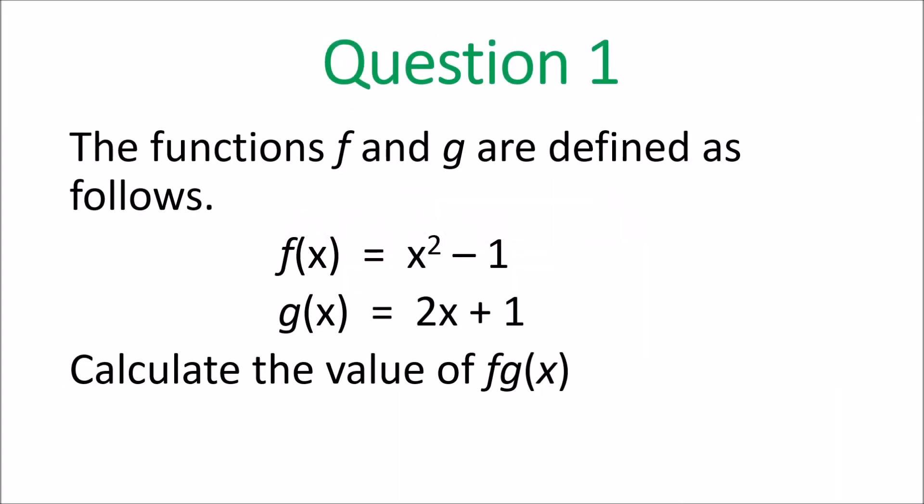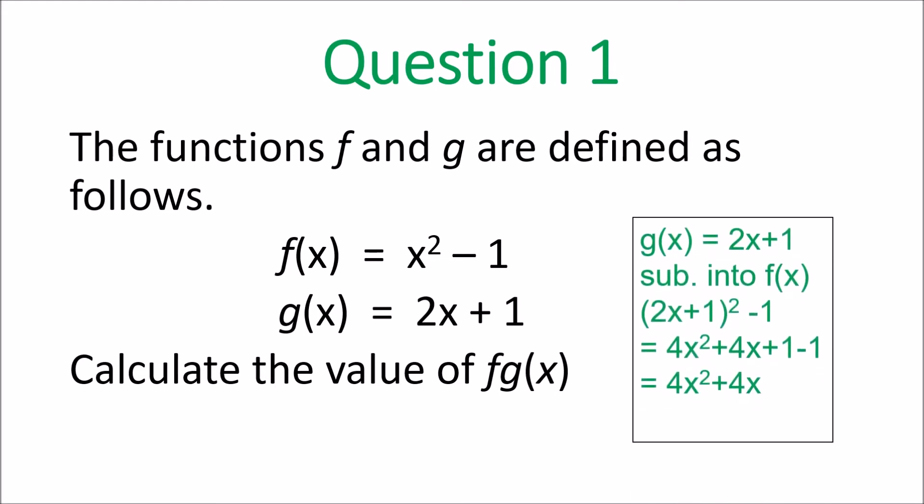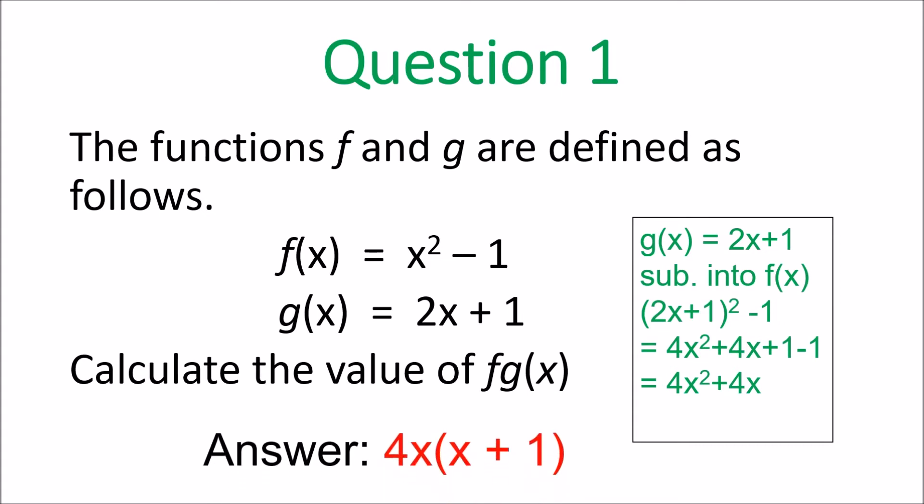Answers. Question 1 — we have a composite function. g of x is 2x plus 1, so substitute that into f of x. It becomes 2x plus 1 squared minus 1, and you get 4x squared plus 4x, or 4x times the quantity x plus 1.